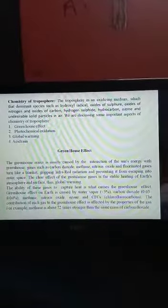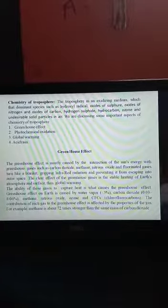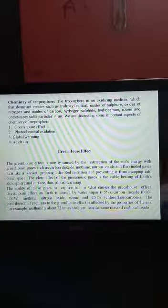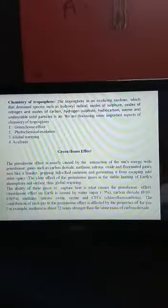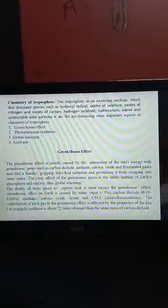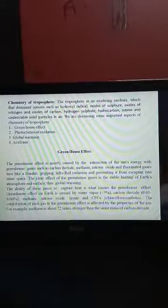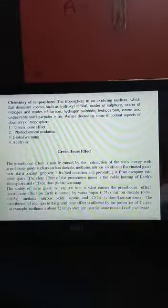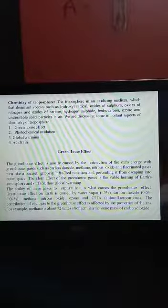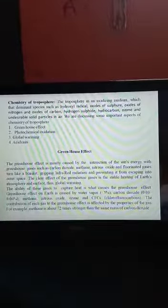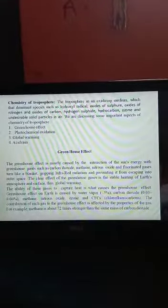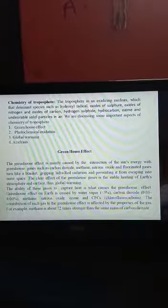Firstly, greenhouse effect. The greenhouse effect is mostly caused by the interaction of sun's energy with greenhouse gases such as carbon dioxide, methane, nitrous oxide, and fluorinated gases which act like a blanket trapping infrared radiations and preventing it from escaping into outer space.